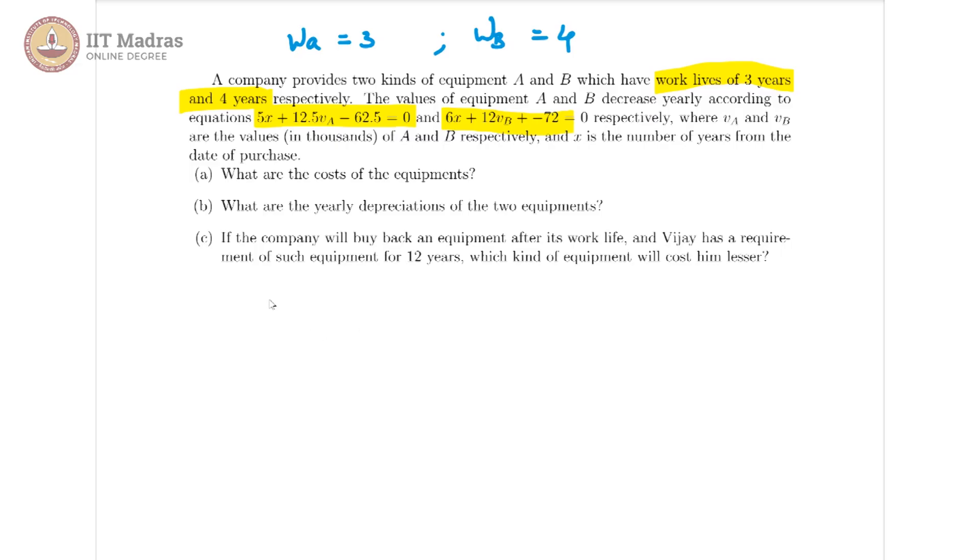So we just take x is equal to 0. From this we get 0.5 VA minus 62.5 is equal to 0. This would give us VA is equal to, to indicate that this is at the initial time I am going to make it VA naught. So this is VA naught and that is 62.5 divided by 12.5 which is equal to 5.